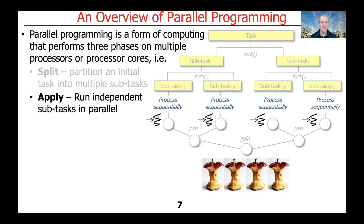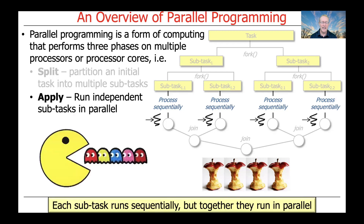The next phase is the apply phase, which involves running these independent subtasks in parallel on multiple threads mapped to multiple processor cores. Each subtask runs sequentially within its thread and core, but together the aggregate of these subtasks run in parallel on all the threads and cores.